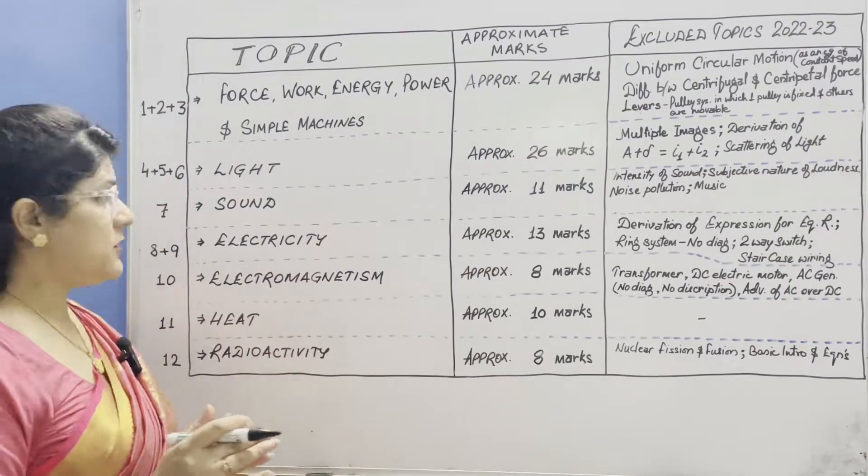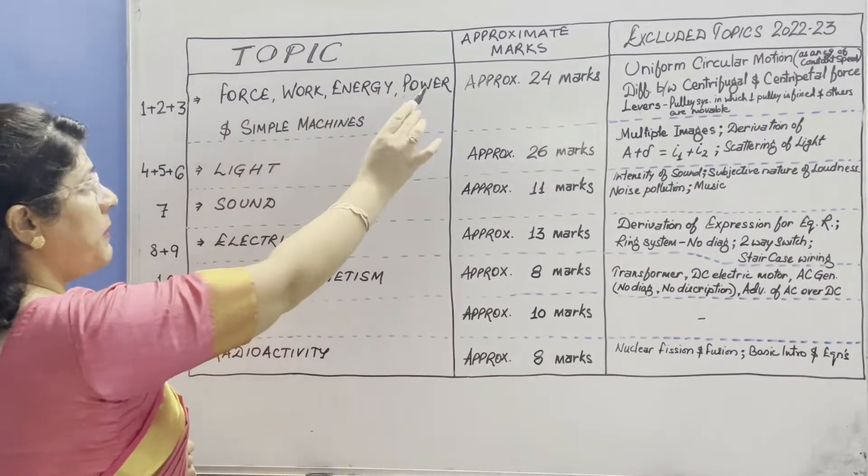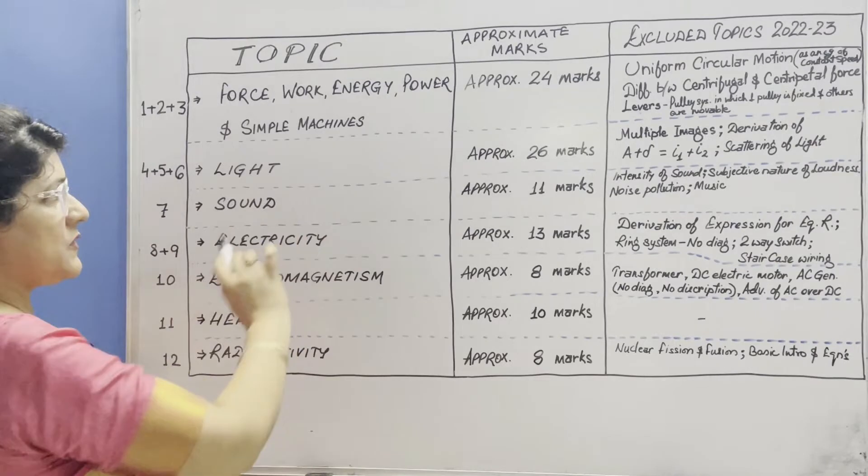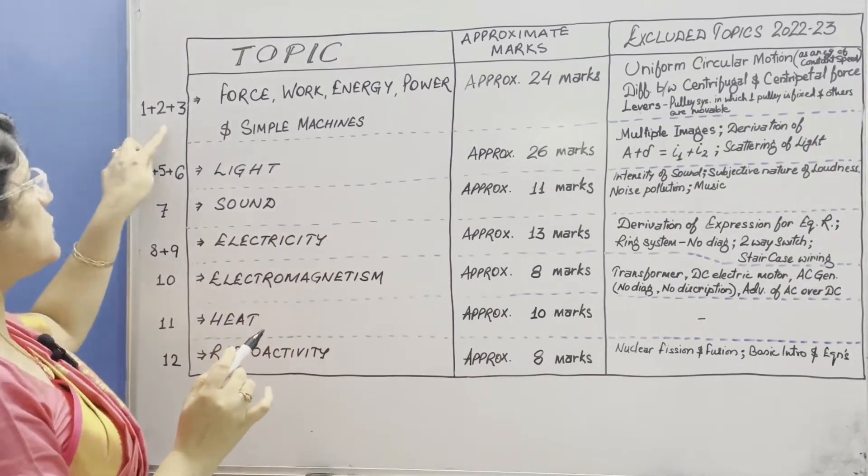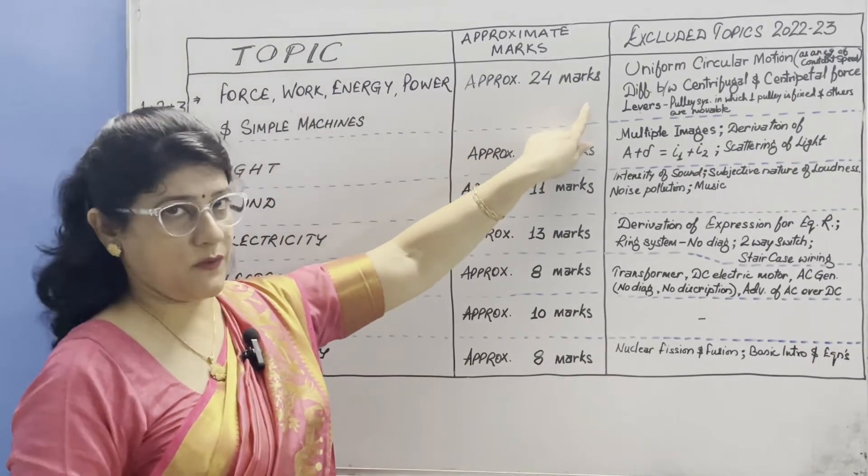Starting with the first unit which comprises chapters on force, work, energy, power and simple machines - that's chapters 1, 2 and 3. This whole unit is of approximately 24 marks.